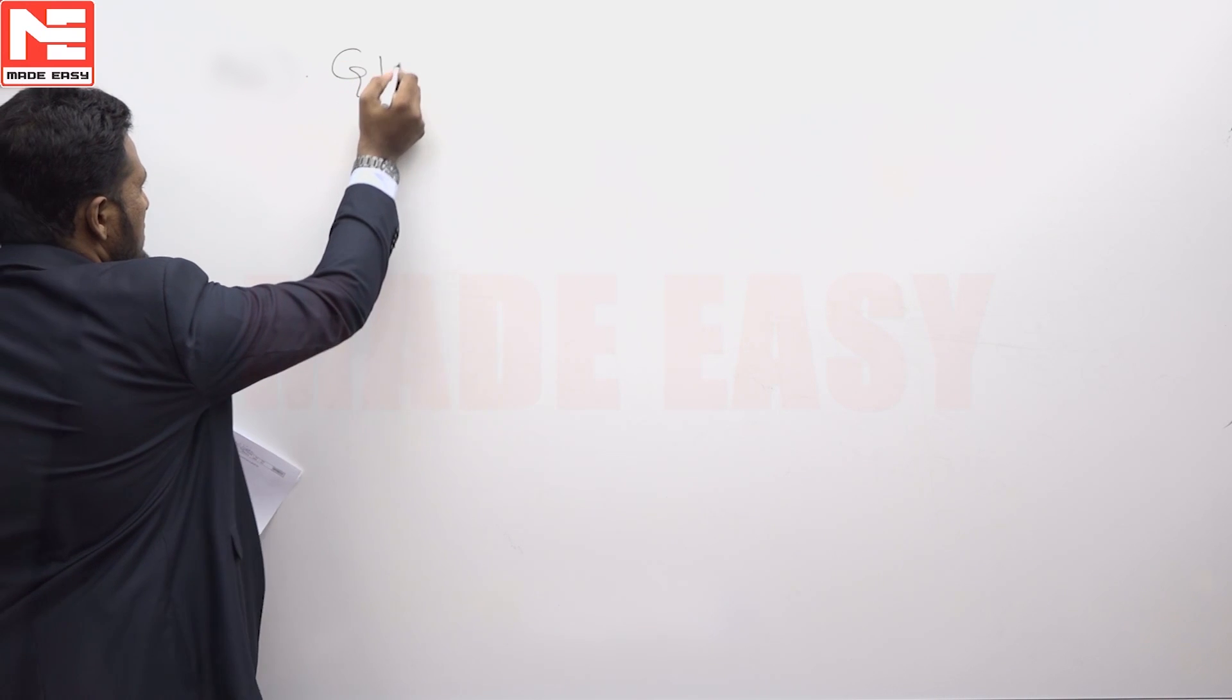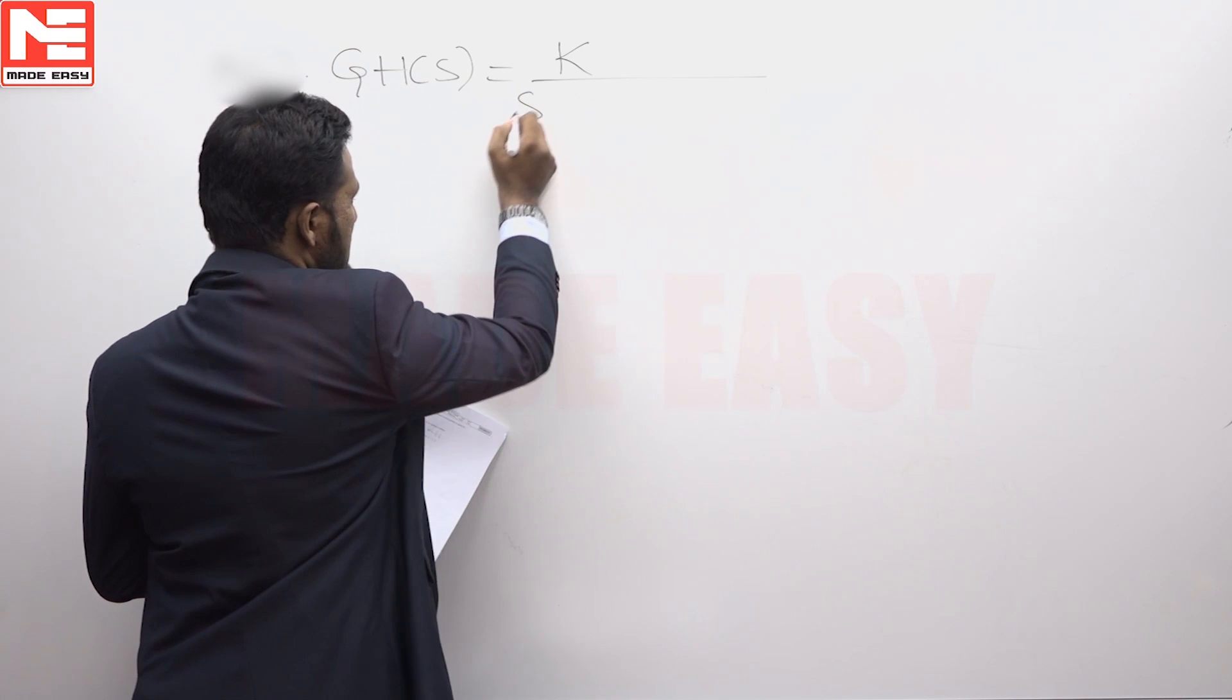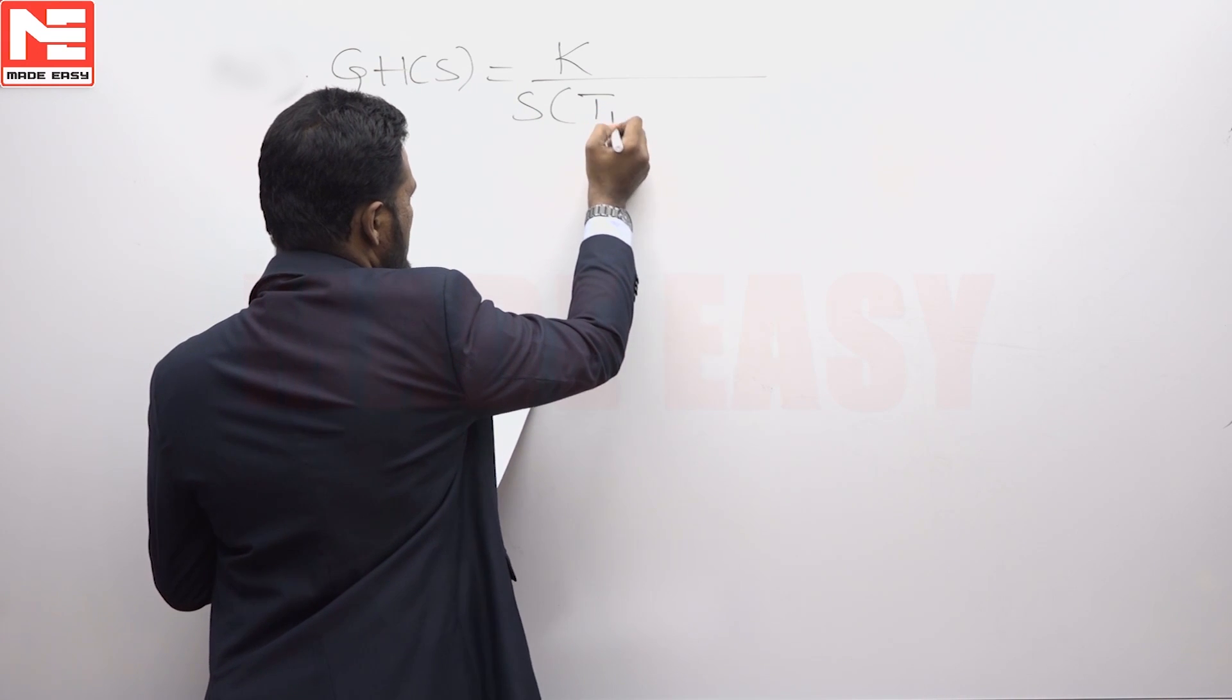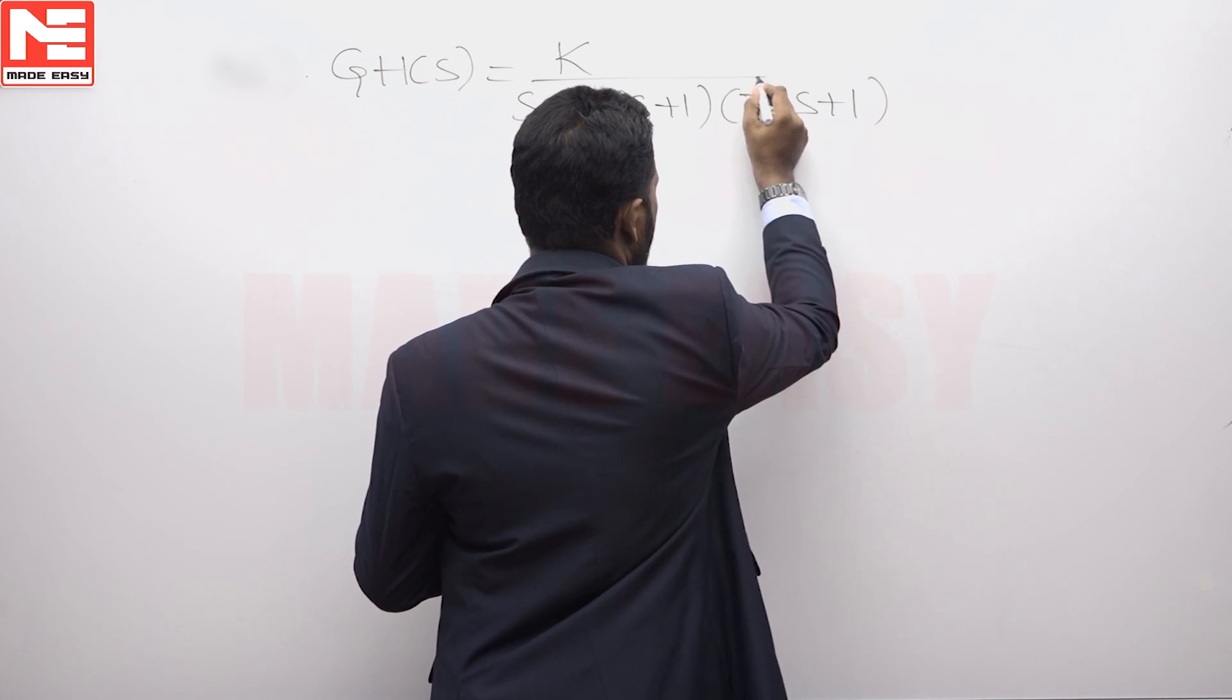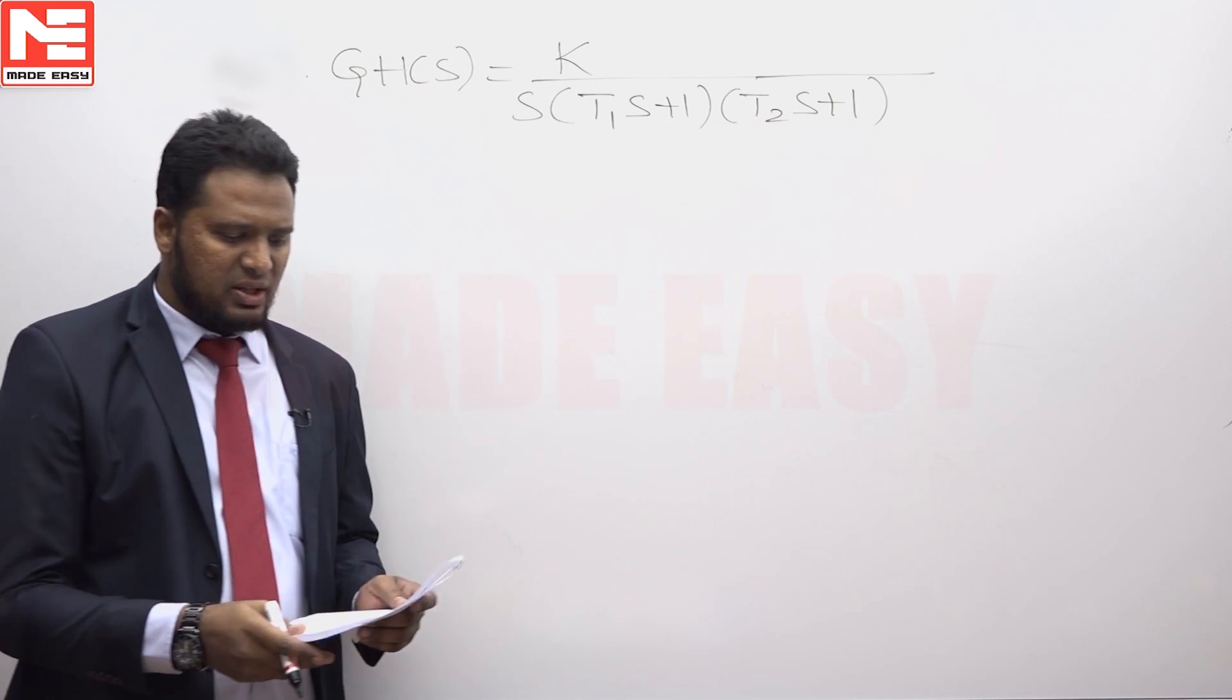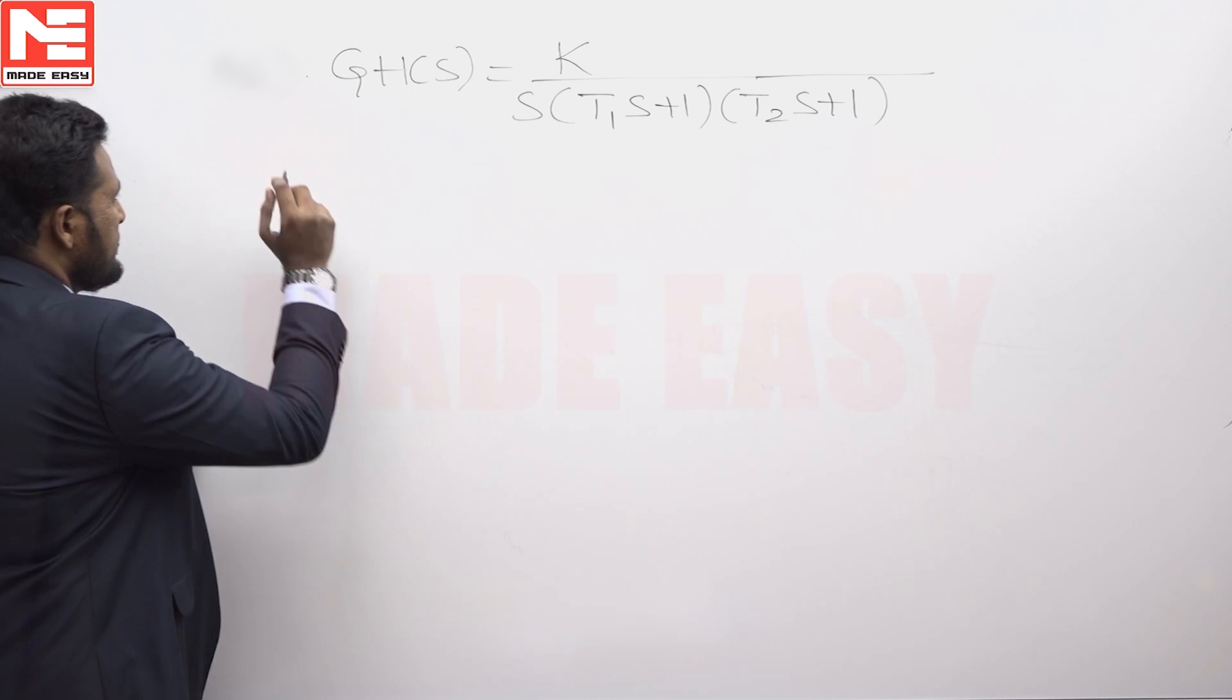The open loop transfer function of a system is k upon s(T₁s + 1)(T₂s + 1). The question is to find the range of values of k for the system to be stable.